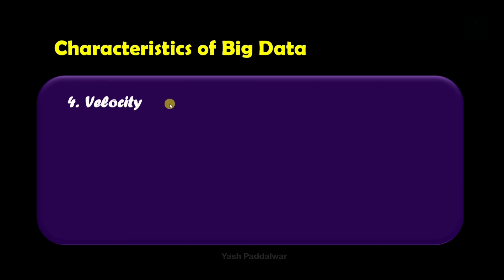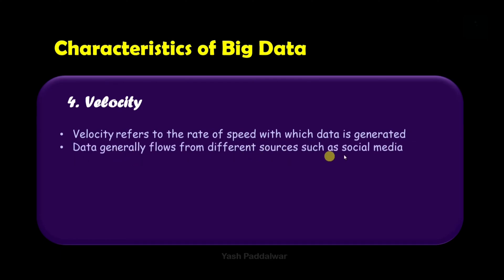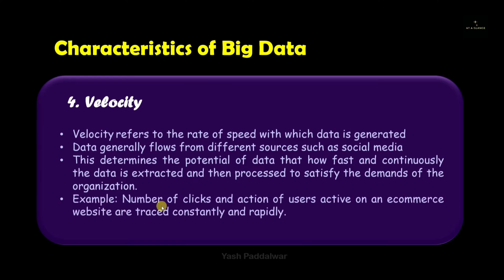The next characteristic is Velocity. The name itself tells us it is related to speed — Velocity refers to the rate at which data is generated. Data generally flows from different sources such as social media every single second. This determines the potential of data: how fast and continuously data is extracted and then processed to satisfy the demands of the organization. For example, big e-commerce companies like Amazon constantly track user activity and analyze and process that activity at very fast speeds.